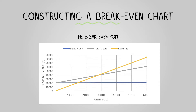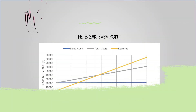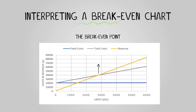Finally, draw the revenue line starting at zero on both axes and rising diagonally according to our sales price per unit. It's important to be able to look at a break-even chart and interpret it, such as identifying where the break-even point is — where the total costs line and revenue line cross.